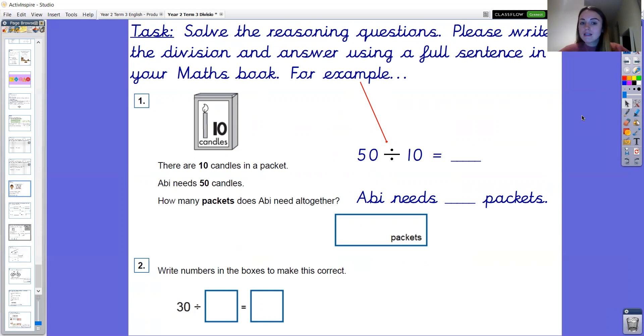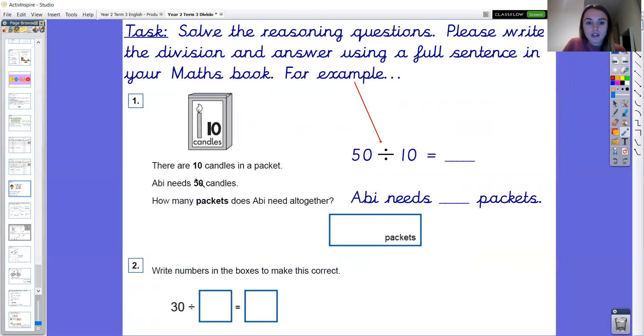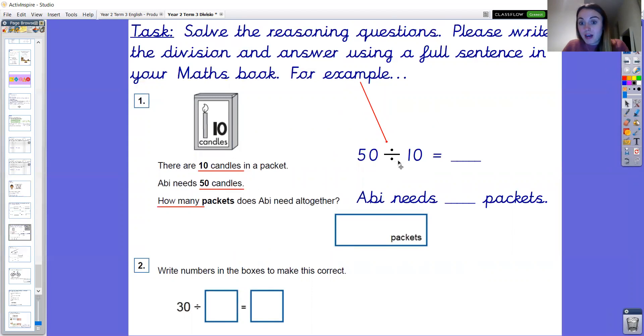So for example, question number one says there are 10 candles in a packet. So I'd be thinking about underlining the key information. There are 10 candles in a packet. Abby needs 50 candles. How many packets does Abby need all together? So again we're thinking about how many. So the division would be 50 divided by 10 equals m. And the stem sentence is Abby needs m packets. You're answering the question in a full sentence. Okay so here is question one and two. You can also find these questions on the class story with the answers.